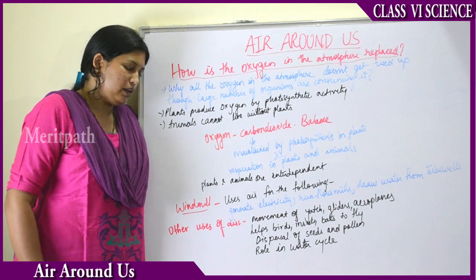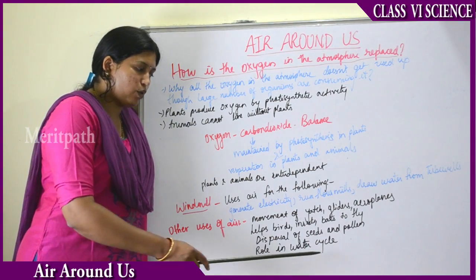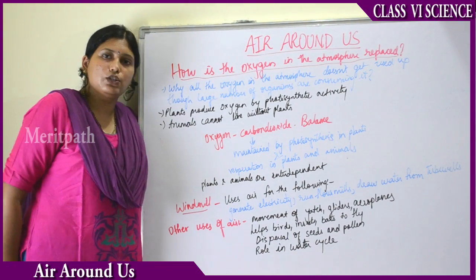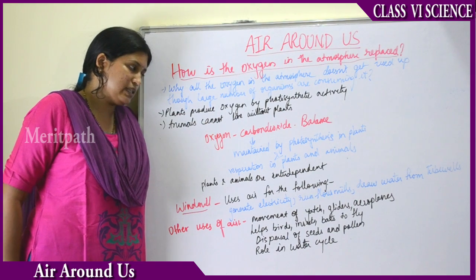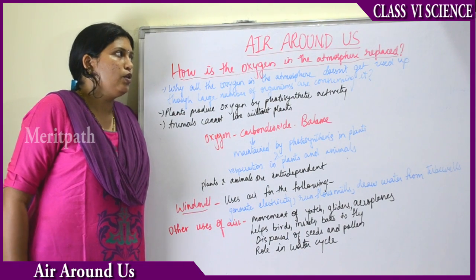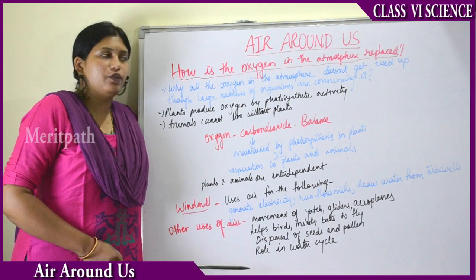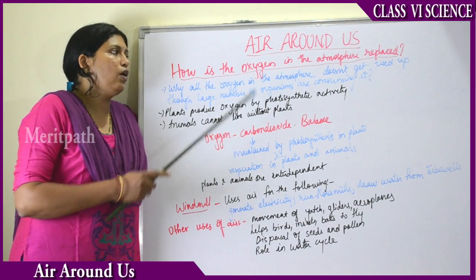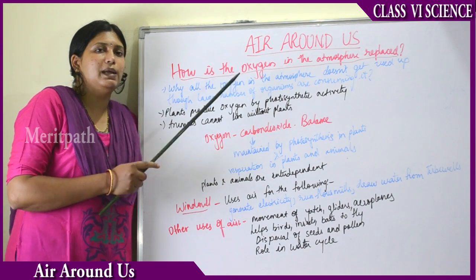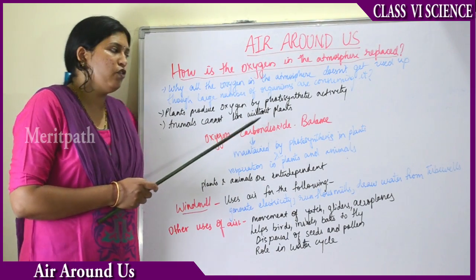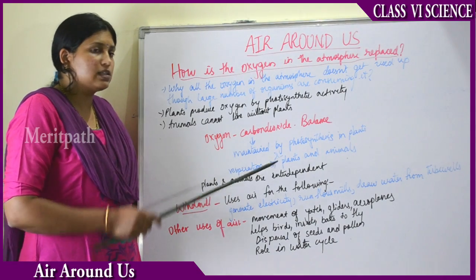Dispersal of seeds occurs with the help of air, and some insects and bees also help in dispersal. Air plays a major role in the water cycle. Overall, the oxygen level in the atmosphere is maintained majorly with the help of plants and also animals.